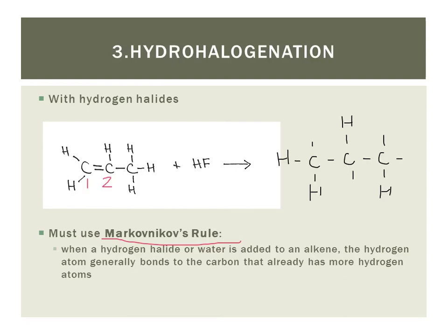So in this example, my hydrogen could either end up on carbon 1 or carbon 2, but because of Markovnikov's rule, I know that my hydrogen needs to end up on carbon 1 and my fluorine needs to end up on carbon 2 so that the carbon that was richer in hydrogen atoms stays richer.